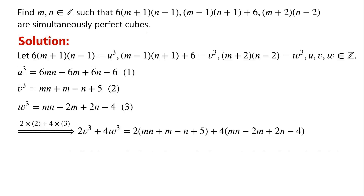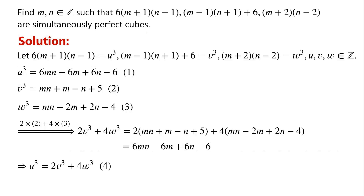Taking equation 2 times 2, plus equation 3 times 4, we have: 2v cubed plus 4w cubed equals 2 times (mn plus m minus n plus 5) plus 4 times (mn minus 2m plus 2n minus 4). Combining like terms, this equals 6mn minus 6m plus 6, which equals the right-hand side of equation 1. So we have u cubed equals 2v cubed plus 4w cubed. We label this as equation 4.